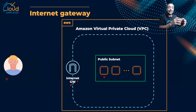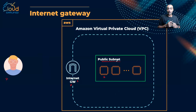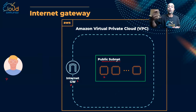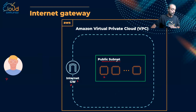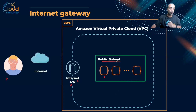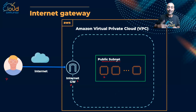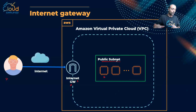The internet gateway is like the virtual router that connects my public subnet to the internet. Another analogy: think of it as the door into your data center or into your public subnet. A user wanting to connect through the internet to my public subnet will have their request go to this entry point — the internet gateway — and then access the public resources inside the public subnet.